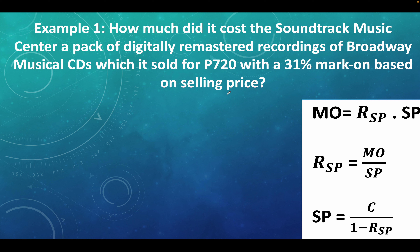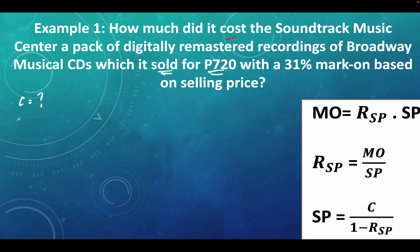Example number one: How much did it cost the Soundtrack Music Center a pack of digitally remastered recordings of Broadway musical CDs, which it sold for $720,000 with a 31% mark-on based on the selling price? So we are looking for the cost. Cost is the one that is missing. Selling price is equal to $720,000. The rate based on the selling price is equal to 31% or 0.31.